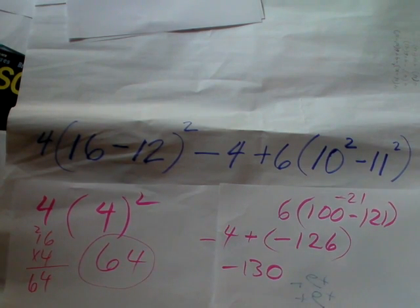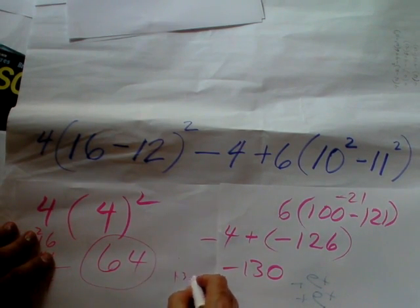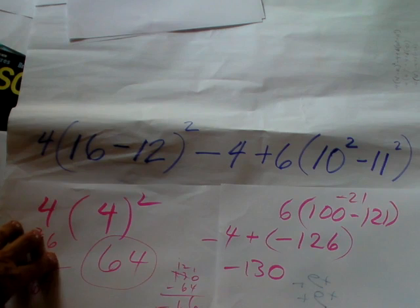Okay. So we got 66. Negative, right? 130 minus 64. There's a 6 and there's a 6. Does that make sense? Thank you.